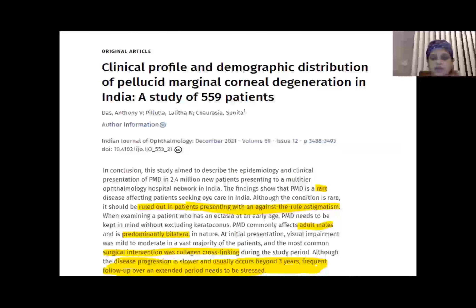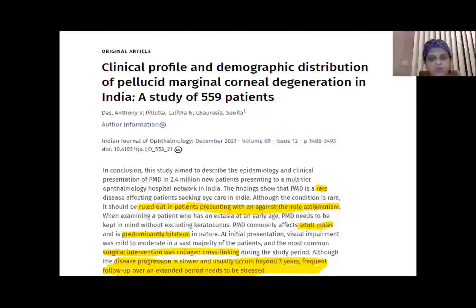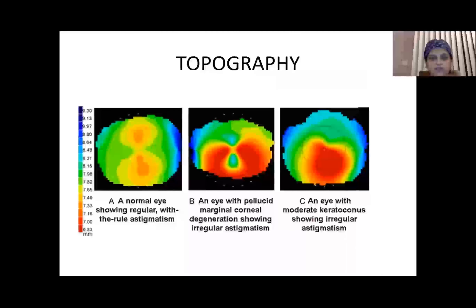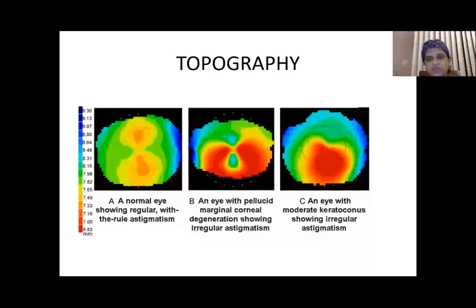An article by Chaurasia et al., recently published in IJO, showed the clinical profile and demographic distribution of pellucid. They found it commonly affects adult males, is predominantly bilateral, and should be ruled out in patients presenting with against-the-rule astigmatism. Disease progression is slower and usually occurs beyond 3 years, so frequent follow-up over an extended period needs to be stressed. Pellucid presents with against-the-rule astigmatism, whereas keratoconus typically shows inferior steepening.